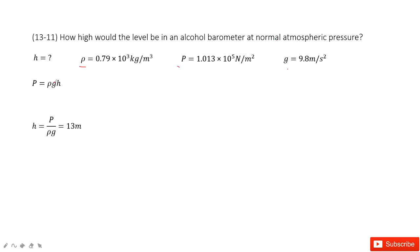So we use the formula p equals rho g h. And then p is given, rho g is given. So very easily you can find H, 13 meters.